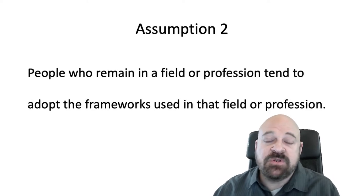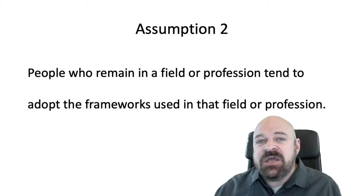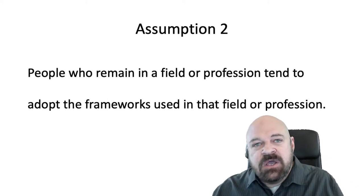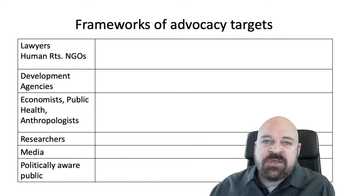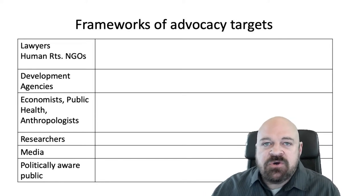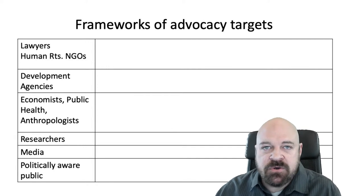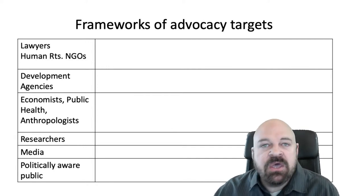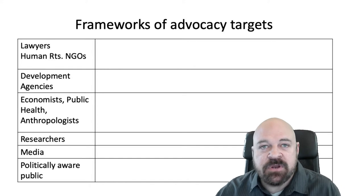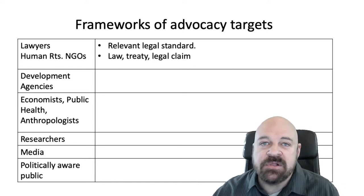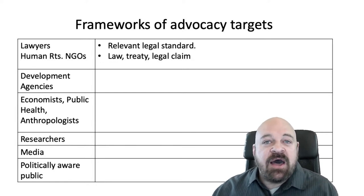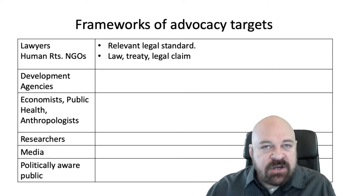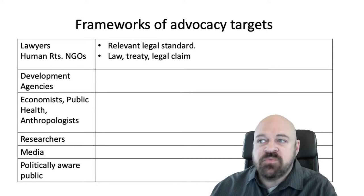We're going to talk about a few different professional groups. For each of these, just think of what their job is, who they work for, and what their training has been. If you're talking to lawyers or people at a human rights NGO, you're most likely talking to somebody who is concerned with what are the legal norms. They've been trained in legal analysis, and these are folks who have a high level of comfort with an adversarial process as a way to reach the truth.